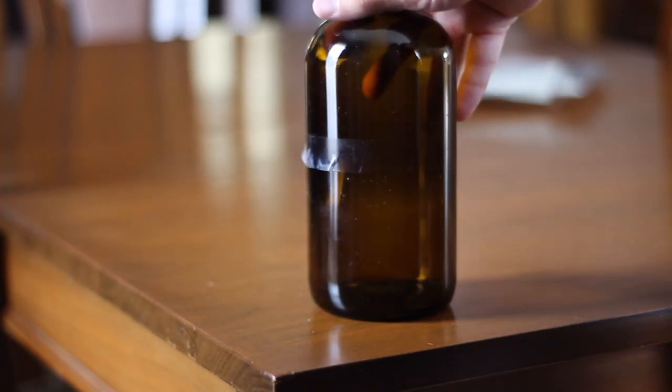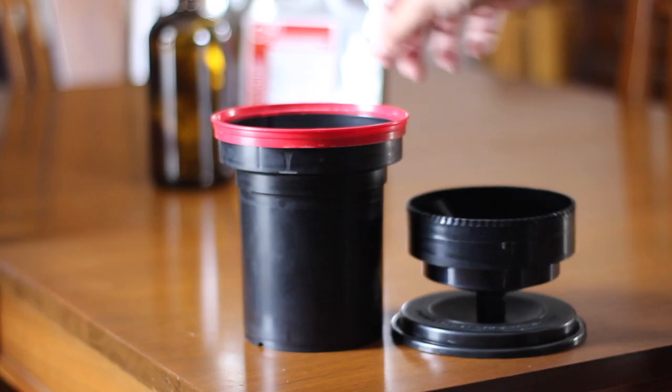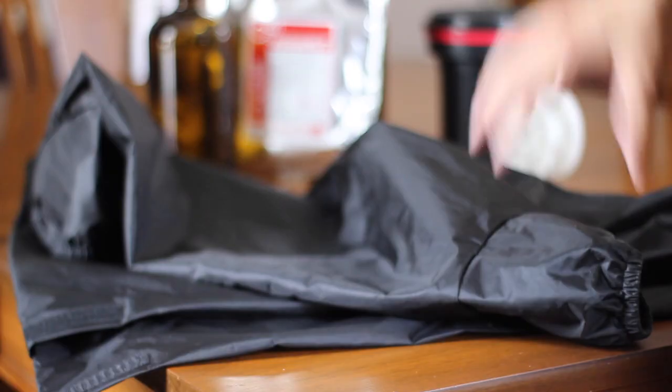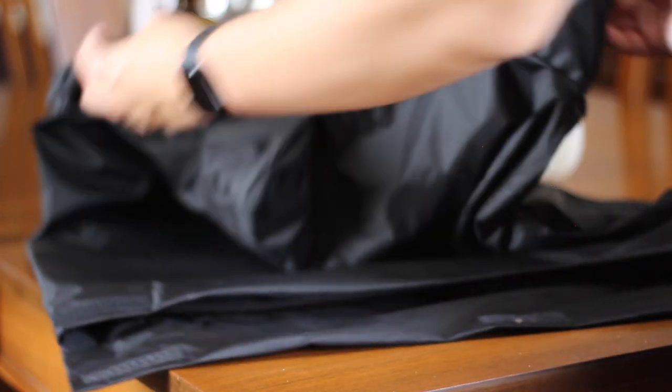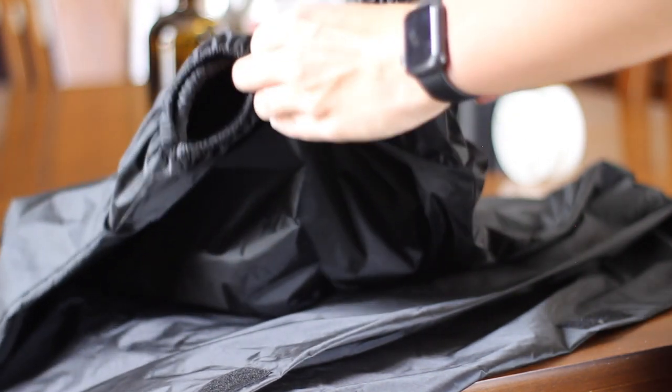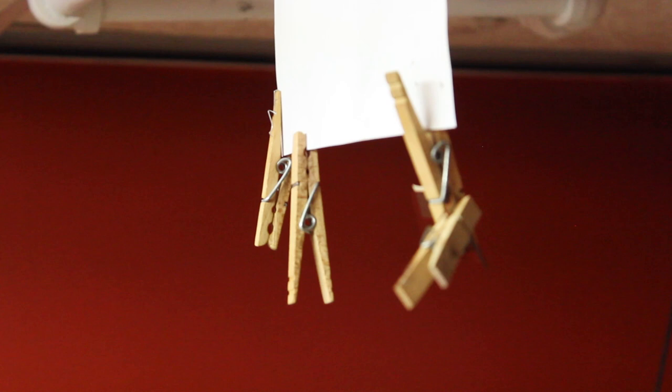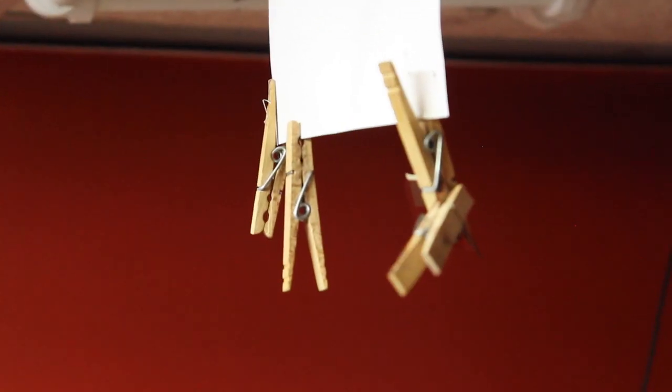Both of which are essential for getting the exposure that you took to actually show on the film. You're also going to want a Patterson developing tank, a way to load the reels. My method is using a Patterson darkroom bag, which won't let any light into the bag when you're loading the film so that it doesn't get exposed additionally. I also use clothespins for drying when I'm hanging my film.